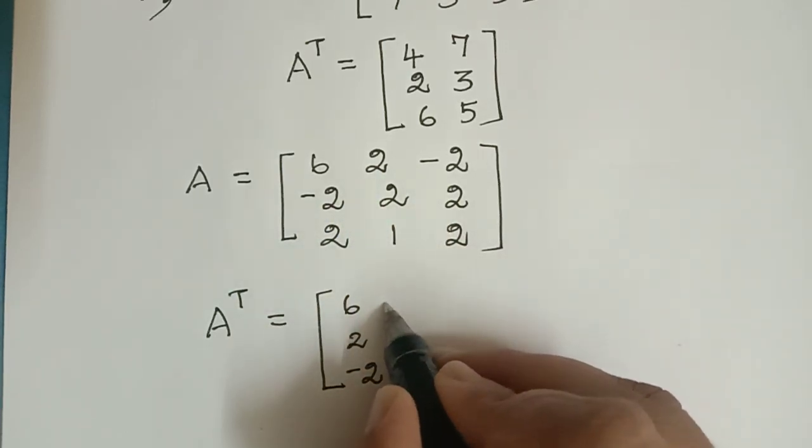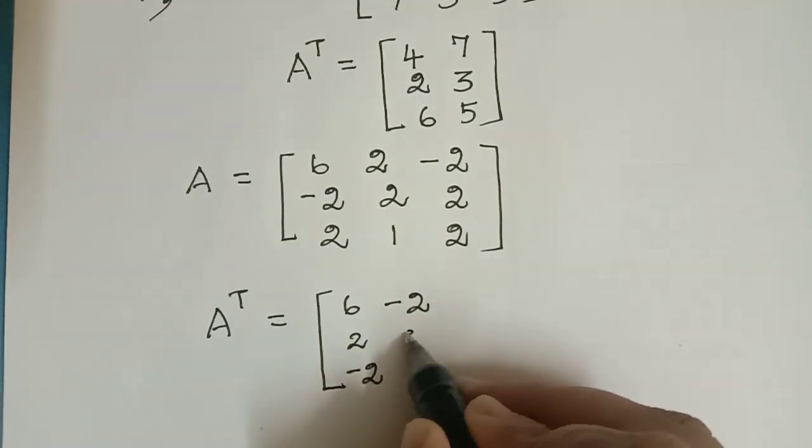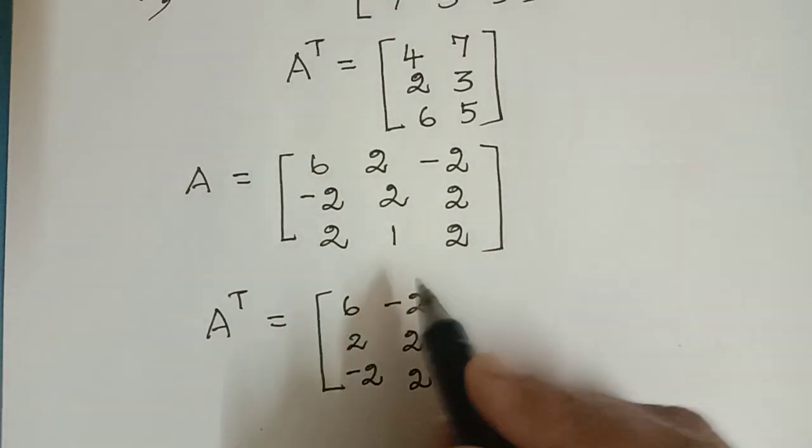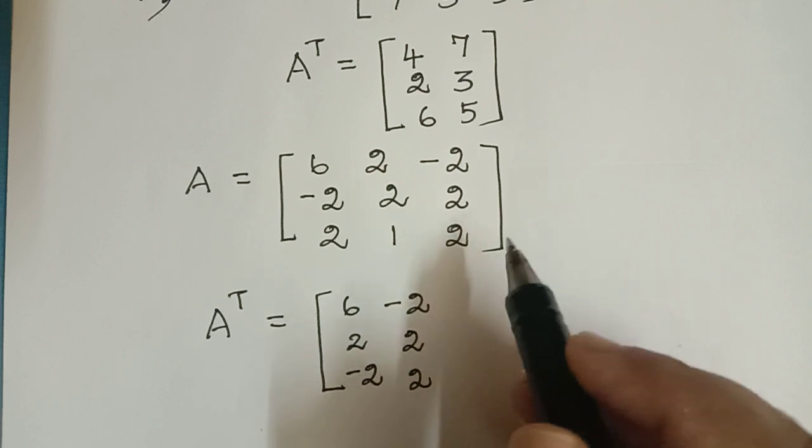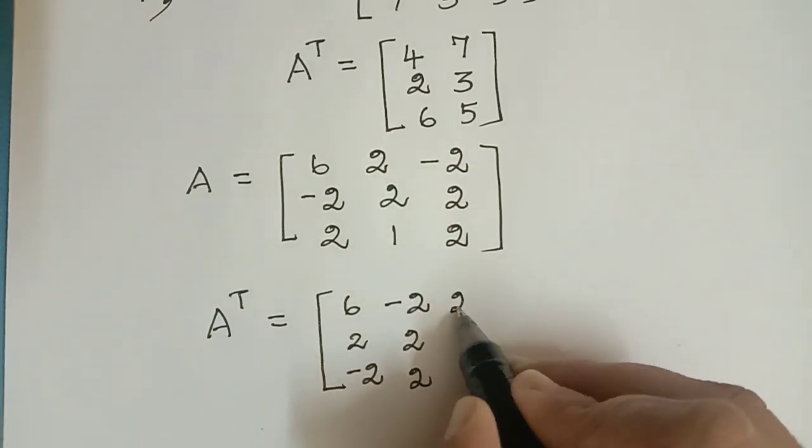So minus 2, 2, 2. And the third row is 2, 1, 2, and it turns out to be the third column. So 2, 1, 2.